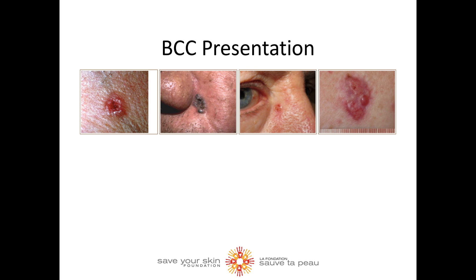Nodular BCC is the classic form. It often presents as a shiny or pearly nodule with a smooth surface. It may appear indented or like an open wound that won't seem to heal. Some are soft like a blister with jelly-like contents. Note that some may also contain melanin and appear brown, bluish, or black.